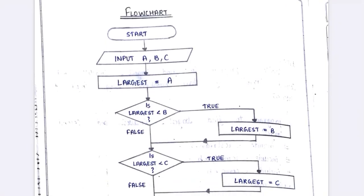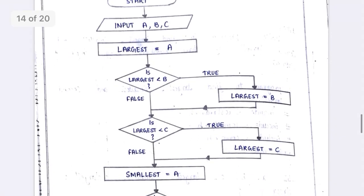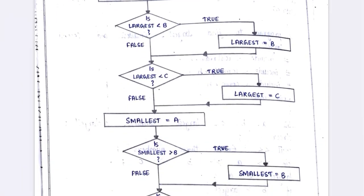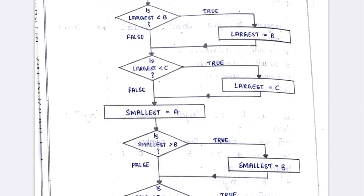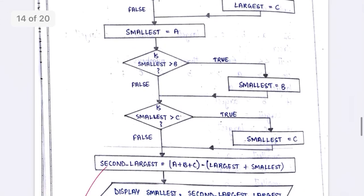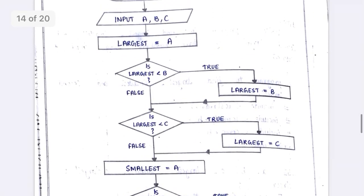In the flowchart you can see: start, then input a, b, c. Initially we assign largest equal to a. See the arrow mark — if largest is less than b and it is true, then b is largest; if false it comes to the next condition. The next step is: if largest is less than c, and if it is true then largest is assigned c. If false, we move on to finding the smallest.